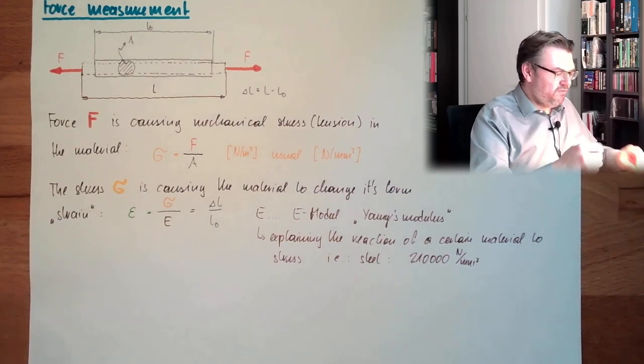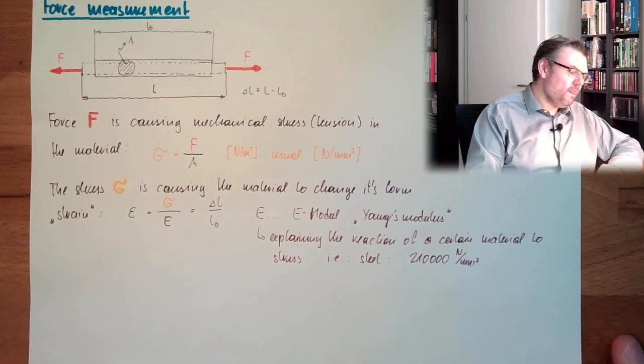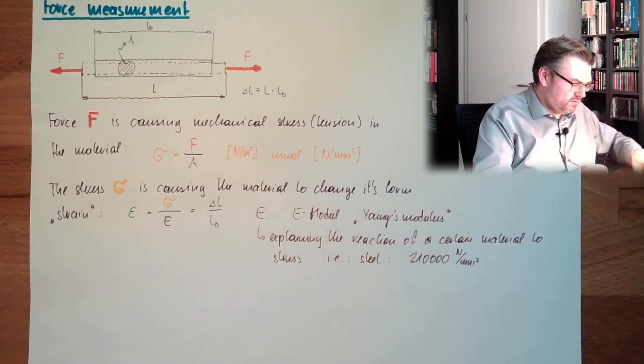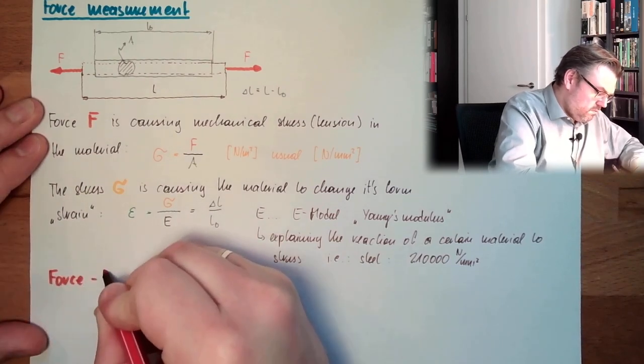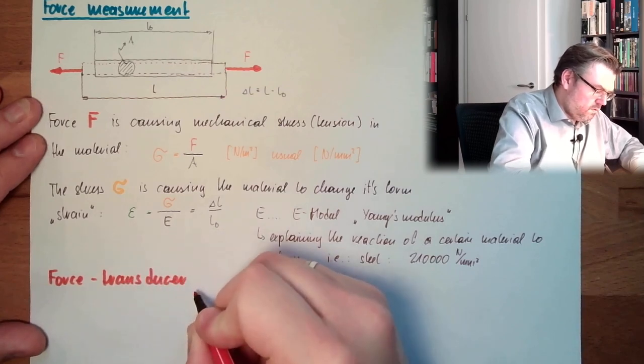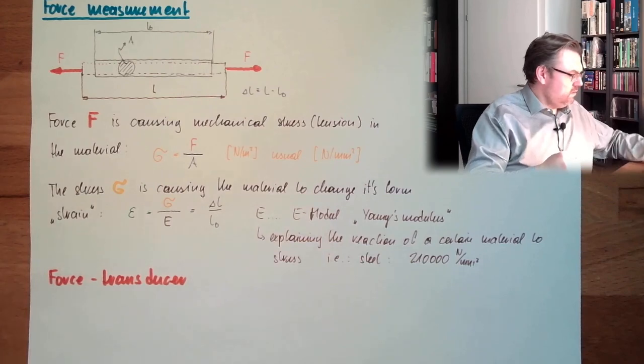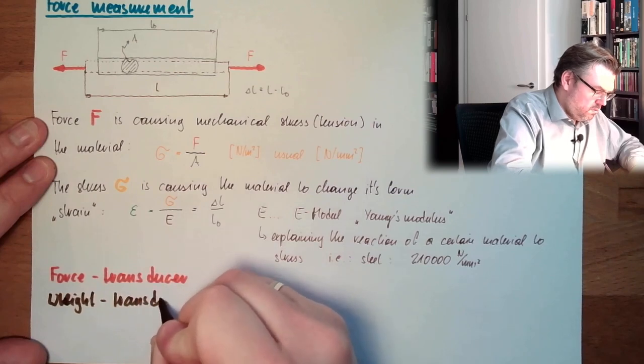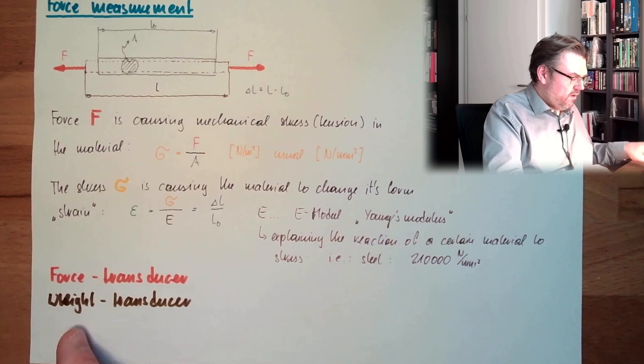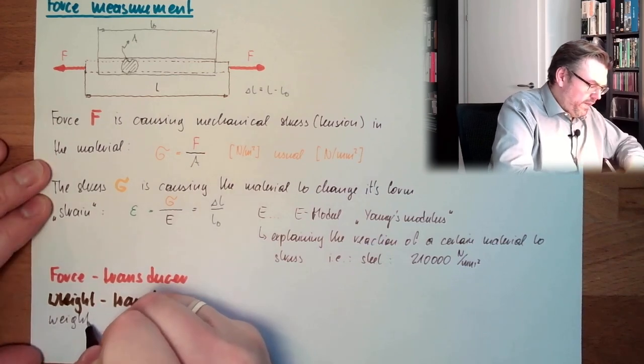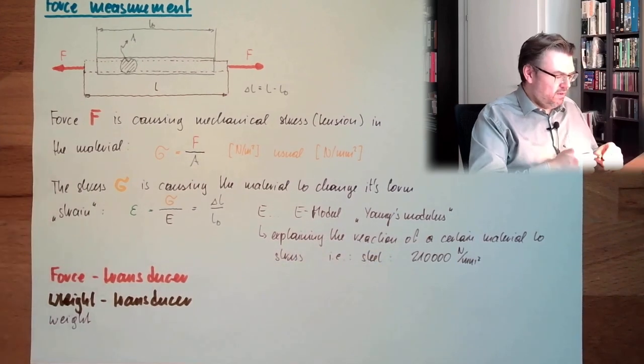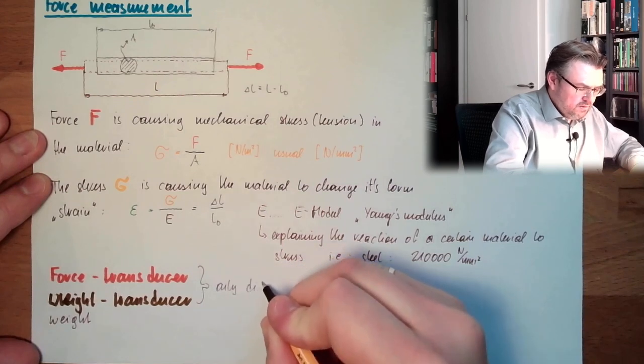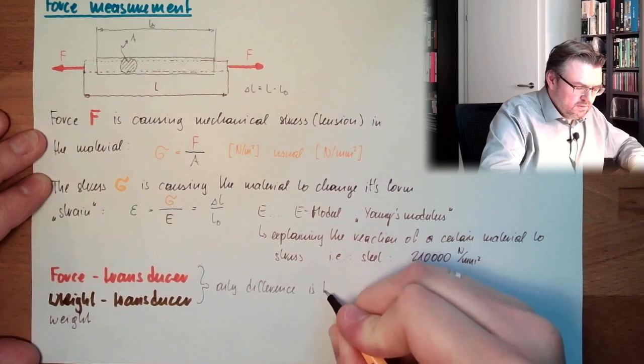This is how a force is affecting material. There are different transducers. So there are, for instance, force transducers or there are also weight transducers. What's the difference between those two? They're both working the same way. Only difference is the calibration.